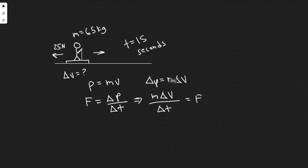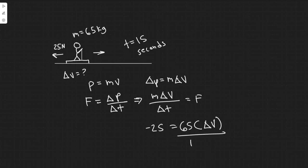But keep in mind when we write the force we want to write it as minus 25 because it's going in the opposite direction. So minus 25 equals m which is the mass which we know is 65 kg times the change in velocity divided by the change in time which is 15 seconds.